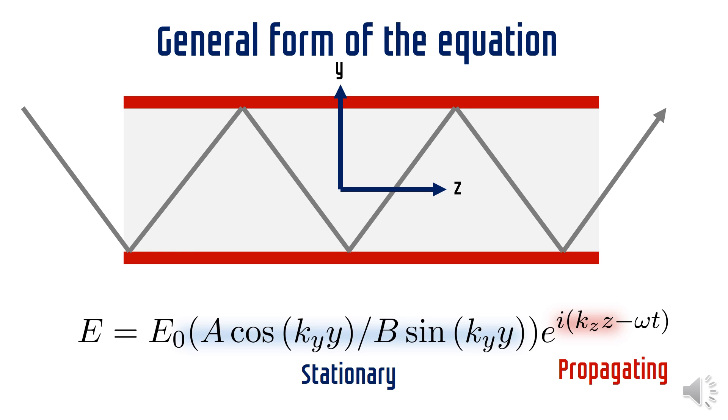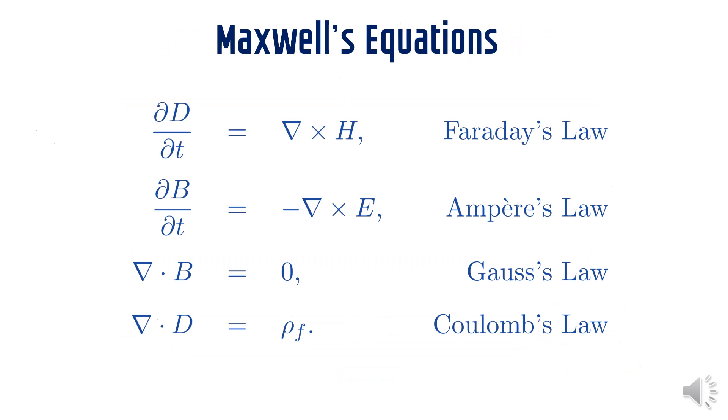Now we wish to find the proper expressions for the different components of the electric and magnetic field. For that we need to know the Maxwell equations as well as their boundary conditions. These are the well-known Maxwell equations. In this video we assume that you are well acquainted with these equations. If not you can easily look up these equations anywhere on the web. Here all these symbols have their usual meaning.